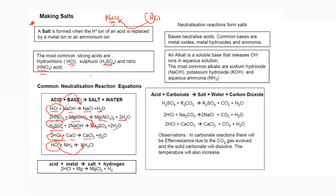When acid reacts with metal, it gives salt and hydrogen — we'll see bubbles. When acid reacts with carbonate, it gives salt, water, and carbon dioxide — again we see bubbles. A soluble base is called an alkali; all alkalis are bases but not all bases are alkalis.